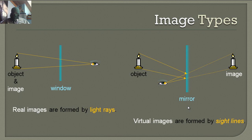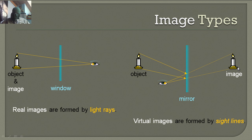In typical mirrors — like the ones in your bathroom or bedroom — we're actually seeing virtual images. These images are formed by the sight line. It's as if we're looking at an image that's beyond the mirror, like behind the mirror — like through the looking glass.